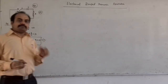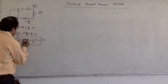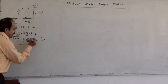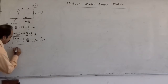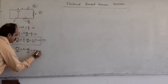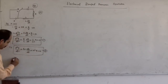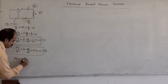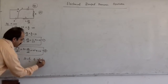Moving forward in a similar way as we did for the mechanical damped harmonic oscillator, we replace the R/L term by 2β and 1/LC by ω², to get: d²Q/dt² + 2β·dQ/dt + ω²·Q = 0. This is equation number 2, where 2β = R/L and ω² = 1/LC.